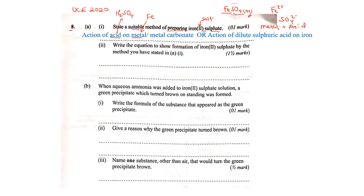We can say action of acid on a metal or action of dilute sulfuric acid on iron, because it's the sulfuric acid that provides the sulfate ion. I prefer the second one because it is specific. However, we can also use a metal carbonate as we will see in part ii.